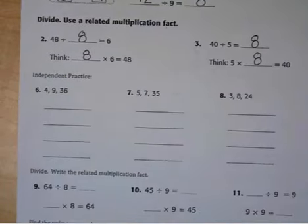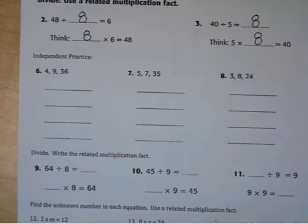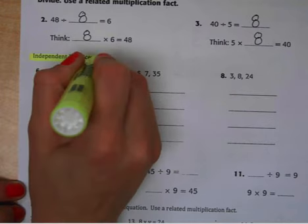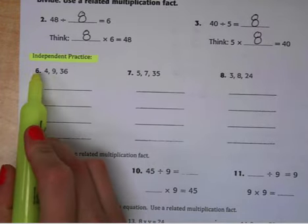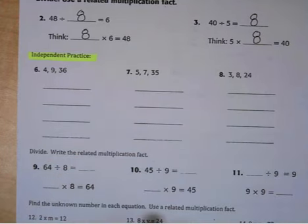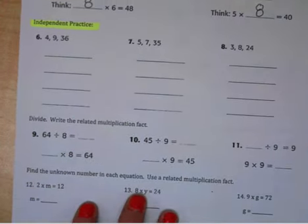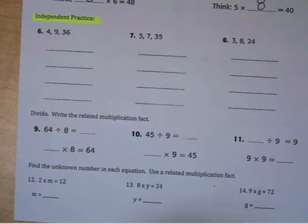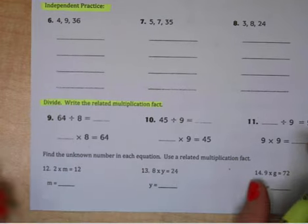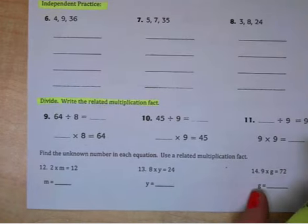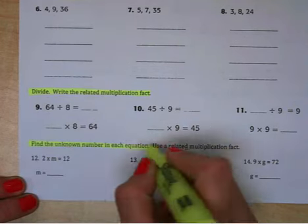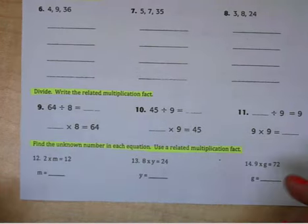For your assignment with this video, I would like you to go ahead and complete these independent practice problems. So you were going to solve write a fact family on number 6, 7, and 8. I would also like you to write a related multiplication fact down here using division. And I would like you to solve for the unknown in each equation down here. You can do this using a related multiplication fact.